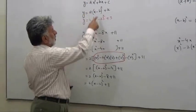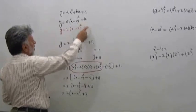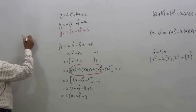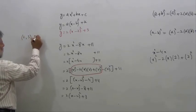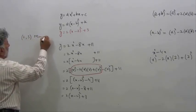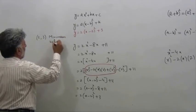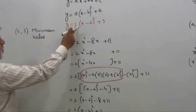So h is 2 and k is 3, so we have (2, 3) as minimum value because a, which is 2, is positive.